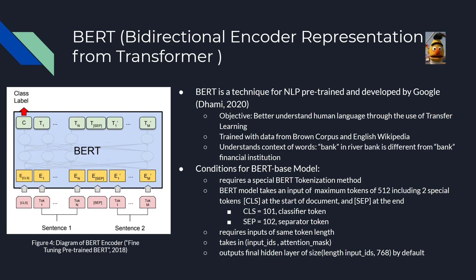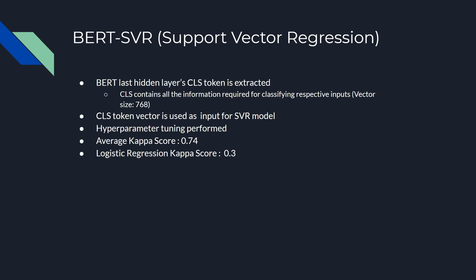Next we explore BERT, bidirectional encoder representation from Transformer. BERT is one of the newest NLP methods. It is pre-trained and developed by Google. The objective of BERT is to understand human language through the use of transfer learning. BERT is also trained with a large dataset from the Brown Corpus and the entirety of English Wikipedia. We chose BERT because it understands the context of words, such as that 'bank' in 'river bank' is different from 'bank' as a financial institution. There are conditions required for using a BERT-based model, which we will discuss in detail in the report.